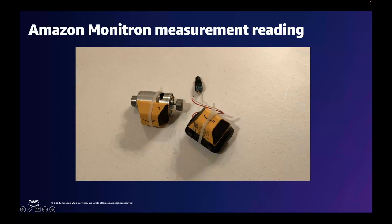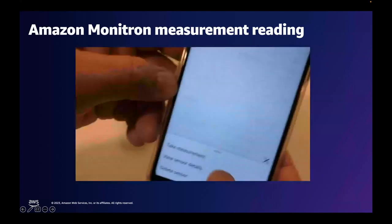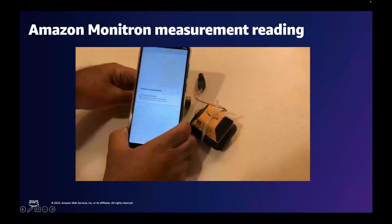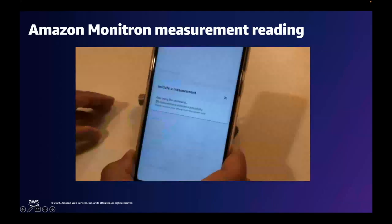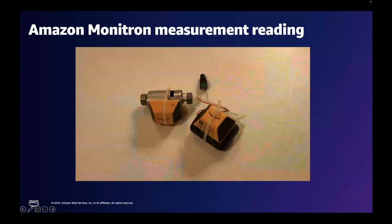It's also possible to take a measurement reading ad hoc from any of these sensors through the Amazon Monitron mobile app using NFC. To take a measurement, you simply go to the asset you want to measure, select 'take measurement', and place the NFC reader close to the sensor. The reading is taken and then sent back to the AWS cloud and the Amazon Monitron service, and the reading is also updated on the mobile app itself. It's that simple to monitor all assets under Amazon Monitron.